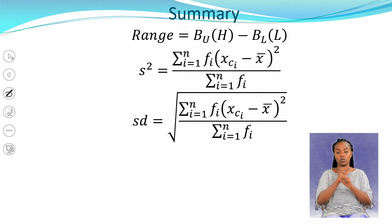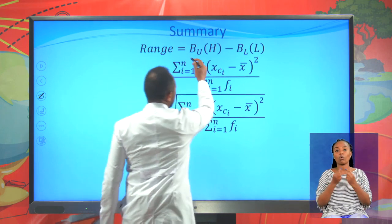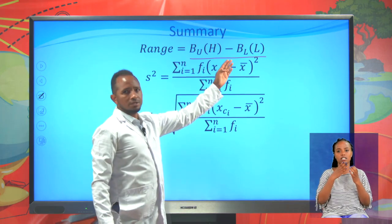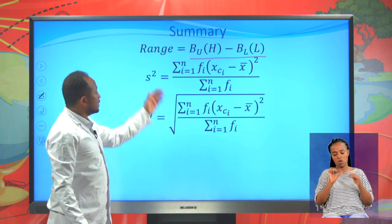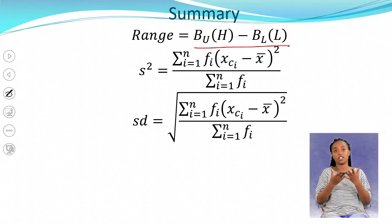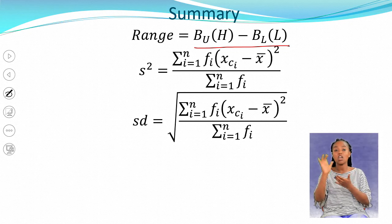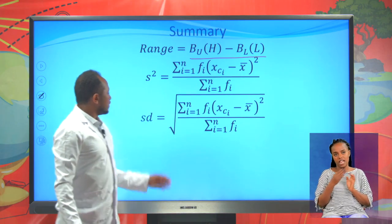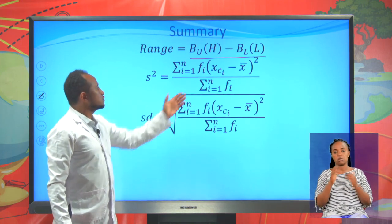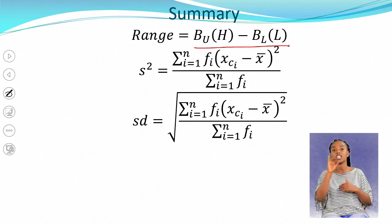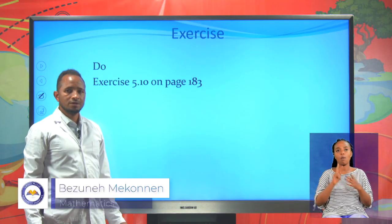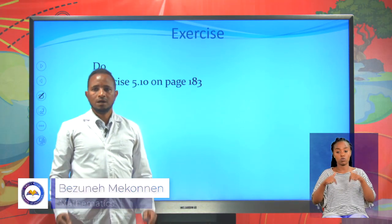To summarize what we have seen today: the range of grouped data is the difference between the upper class boundary of the highest class minus the lower class boundary of the lowest class. Variance is the summation of (xci minus x-bar) squared times fi, divided by the summation of fi. Standard deviation is the square root of variance. Please try exercise 5.10 on page 183. This is all about today's lesson. Until next class, goodbye.